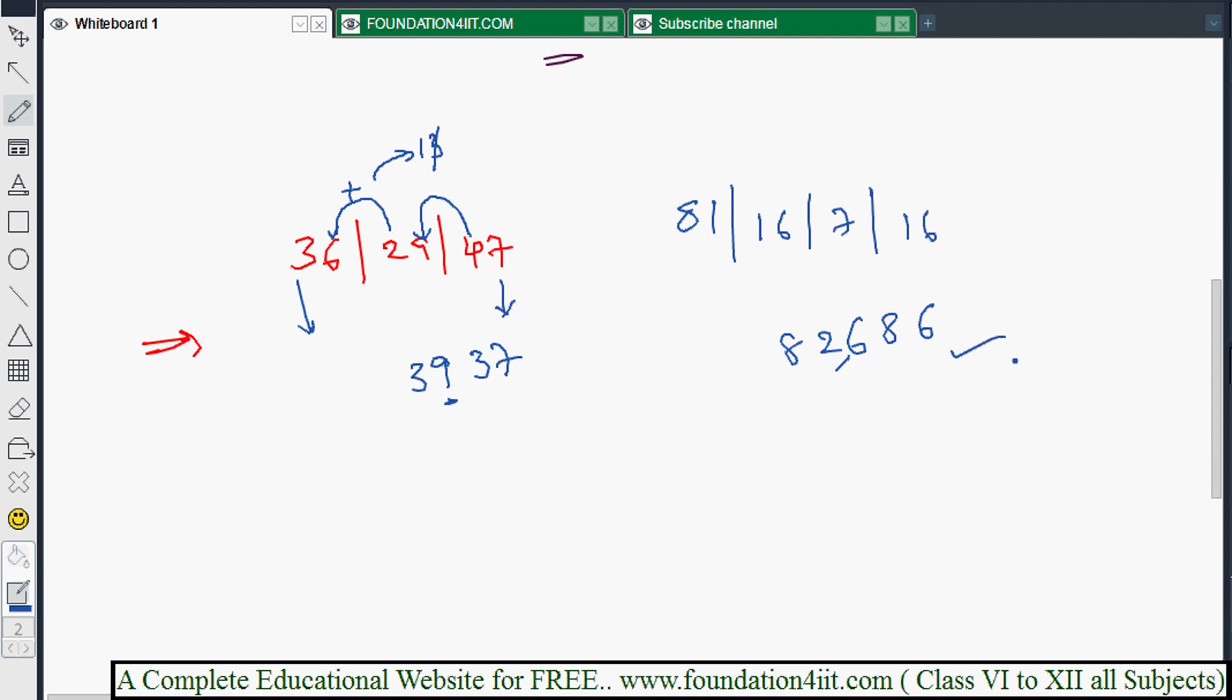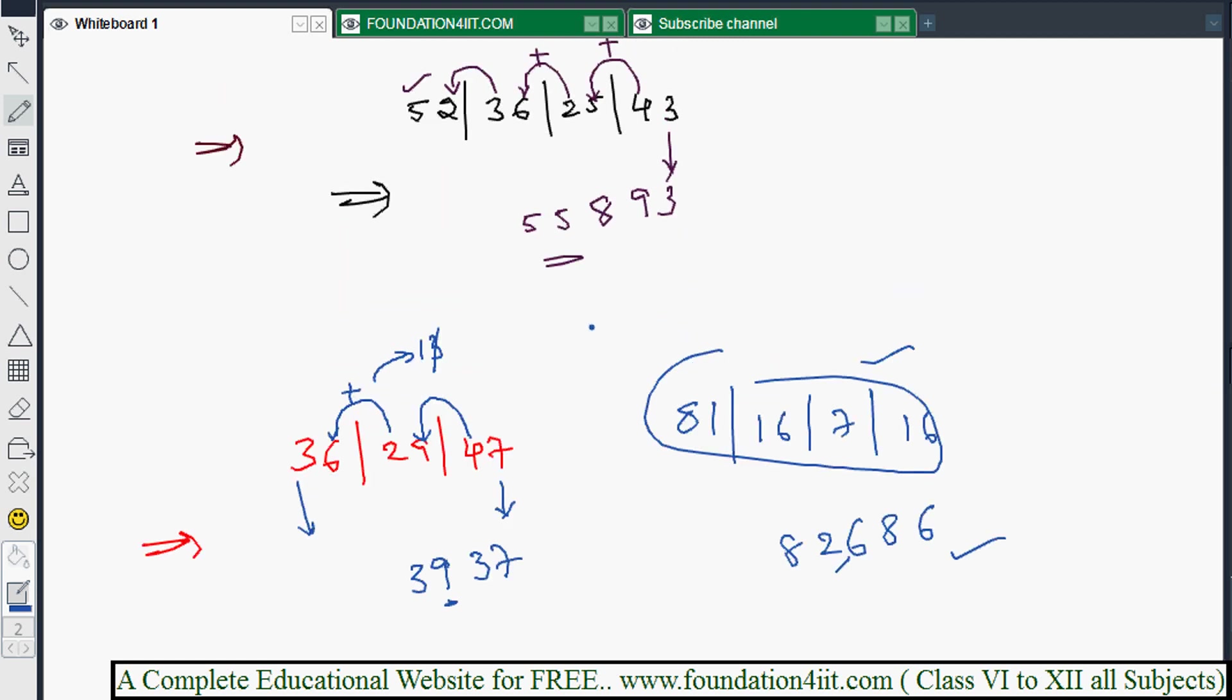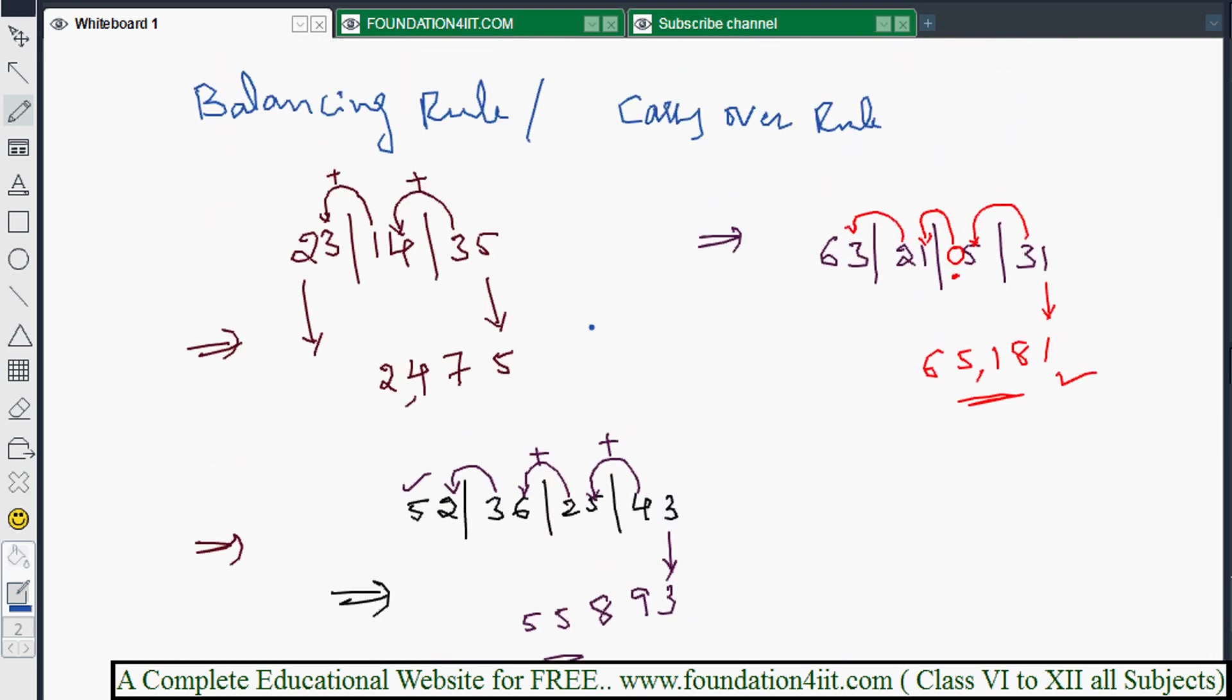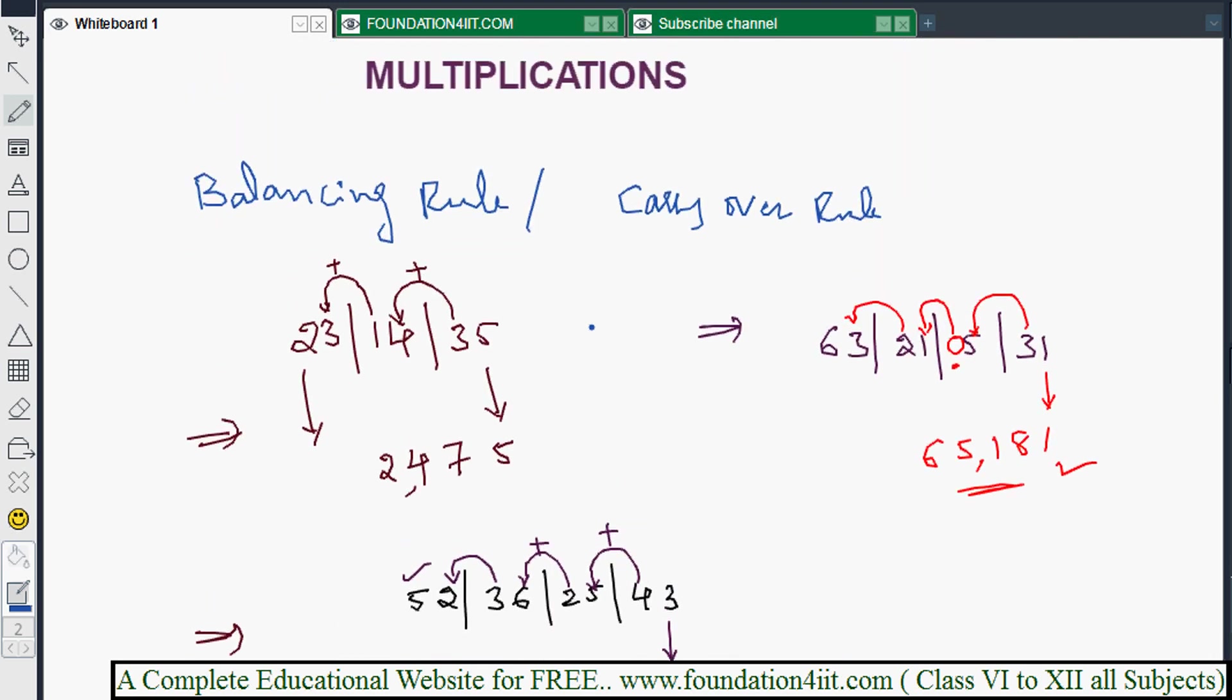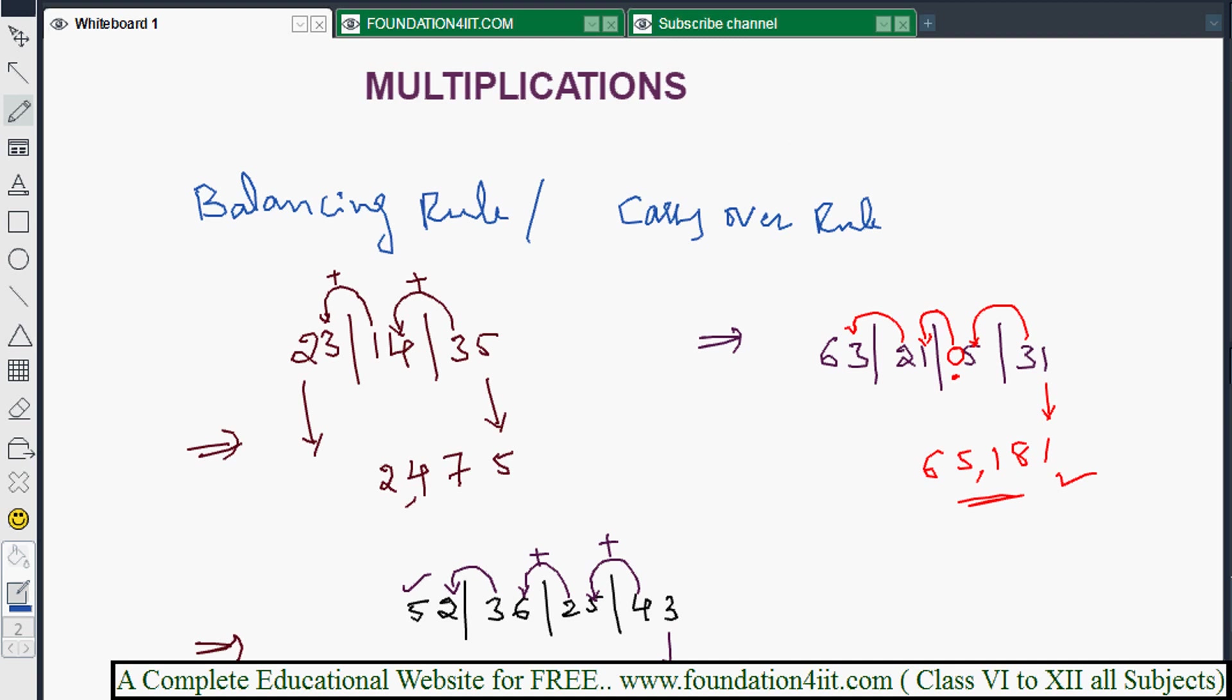In case if you are very perfect in this balancing rule or carryover rule, then automatically you can do the multiplications very fast. Not getting like this questions, how to do by using single digit multiplication, double digit, everything I'll explain you clearly, but before that you must get aware of what is balancing rule or carryover rule in multiplication.